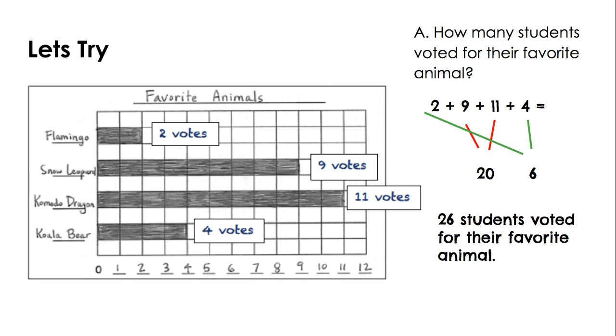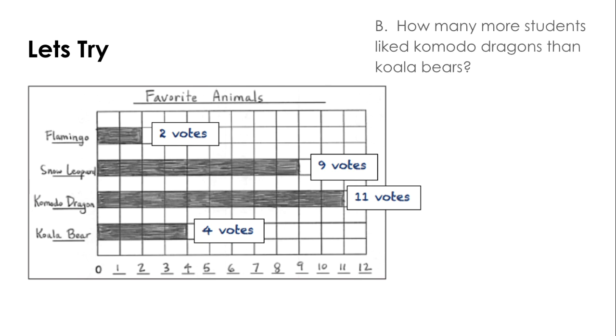Let's move on to question B. How many more students liked Komodo dragons than koala bears. Let's take a look at our chart. The only way that we're going to be able to solve this is if we use the bar graph. So let's look at the two animals mentioned. Komodo dragon, I see that Komodo dragon got 11 votes. Koala bears, I see koala bear got 4 votes. Okay. So now what do we do with those numbers?